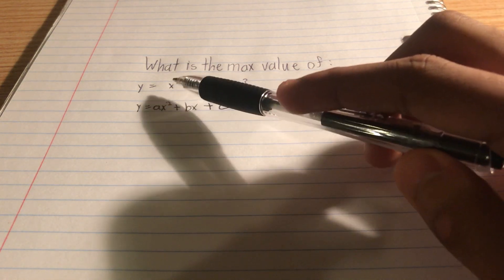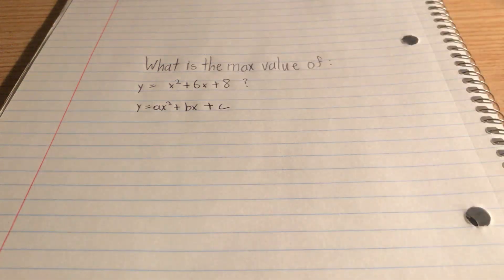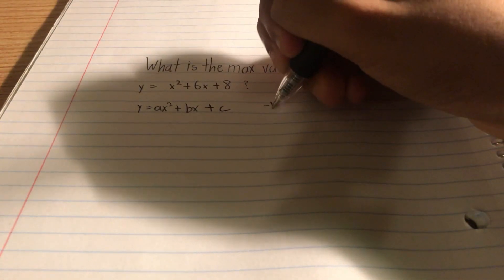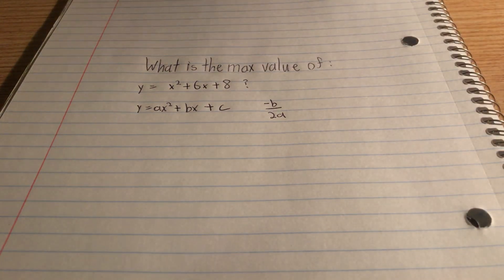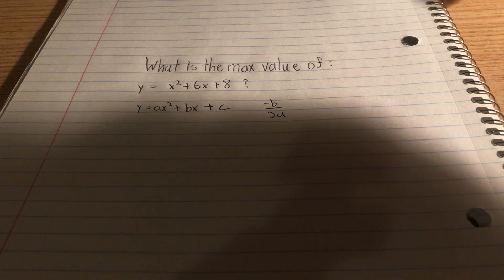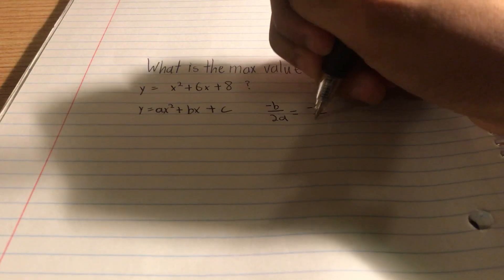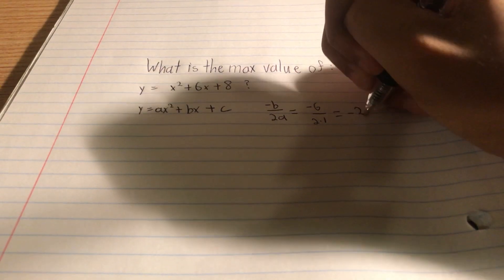In this case, a is just 1, and b is 6. So we can use the formula for a vertex, which is negative b over 2a, to find the x value of the maximum value. So negative b over 2a is just equal to negative 6 over 2 times 1, and that is equal to negative 3.